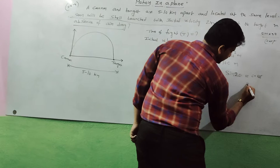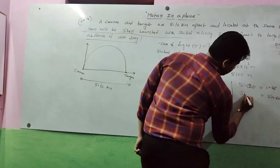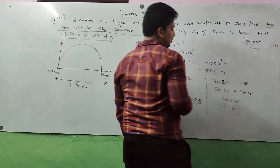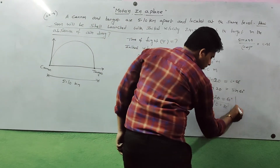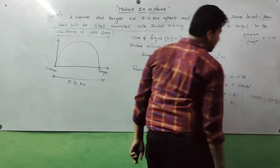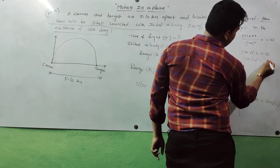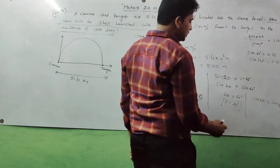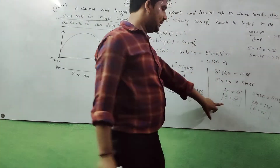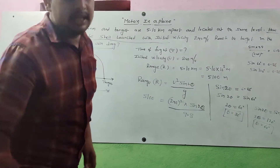0.86 can be represented as sin 60 degrees. So sin2θ = sin 60°, which gives 2θ = 60°, and therefore θ = 30 degrees. Similarly, sin2θ = sin 120°, and sin 120° is also 0.86. So 2θ = 120°, giving θ = 60 degrees. The two possible angles are 30 degrees and 60 degrees.